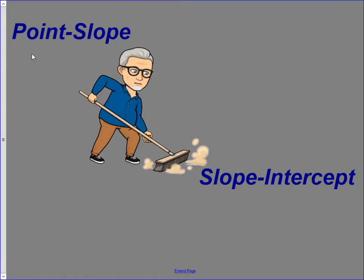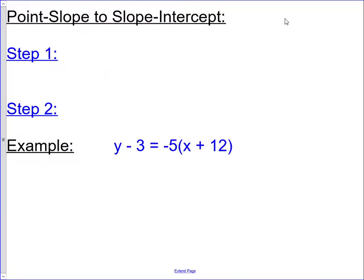I'd like to talk to you about how to go from point-slope form to slope-intercept form. Let's talk about slope-intercept form for just a minute. An equation is in slope-intercept form when it's in this form: y = mx + b, where m is the slope and b is the y-intercept.